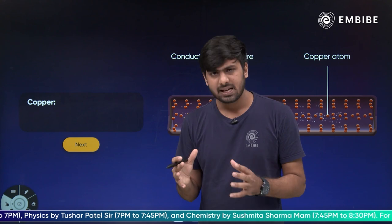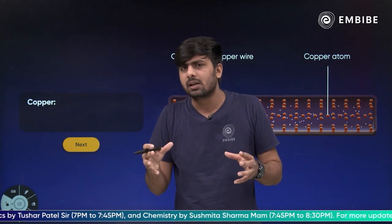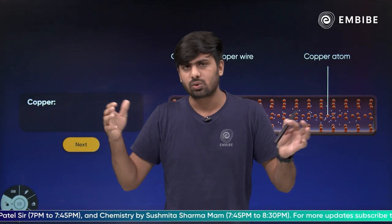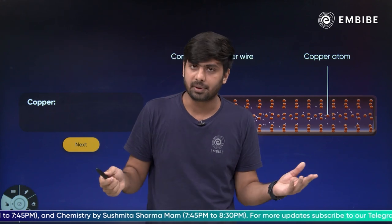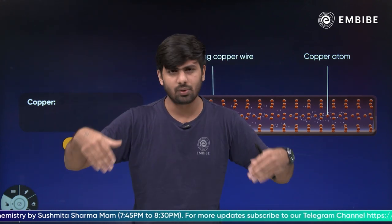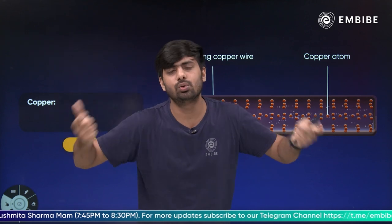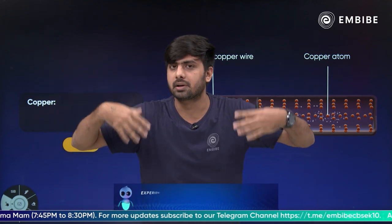Now we have seen the length and area of the material that you can see. Plastic and copper. Plastic and copper length same, area same, it is not the same. Why? Because the resistivity is different. Resistivity is different.